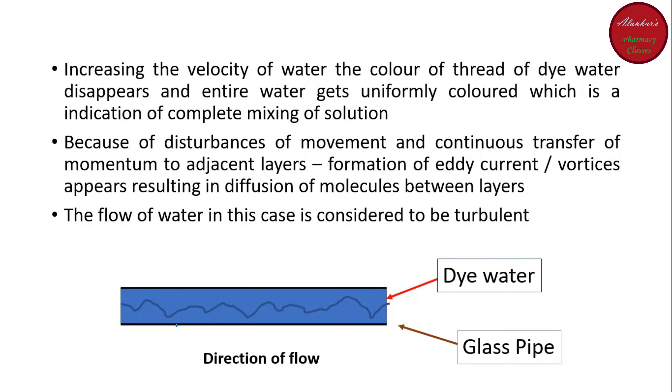And there is another observation that is after increasing the velocity of the water. So, what he found that increasing the velocity of the water, the color of the thread of dye water disappears. And the entire water gets uniformly colored, which is the indication of the complete mixing of solution. Here what is happening? When he increases the flow of water, the molecules which are traveling in the adjacent layers, because of the increase of the velocity of water, there is a formation of the edges and vertices.